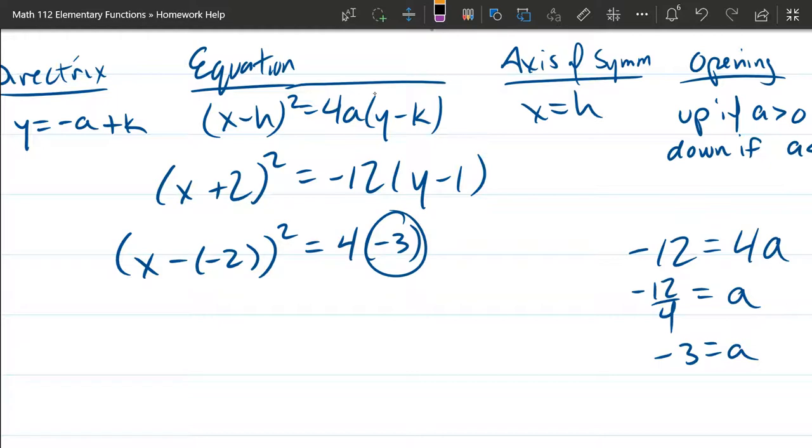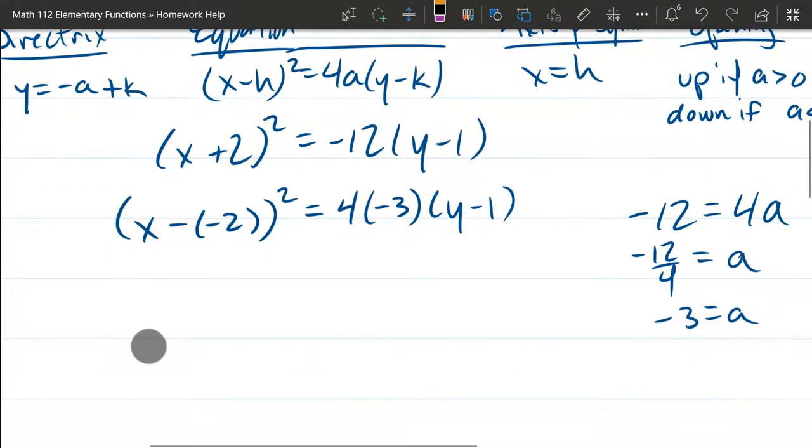So you see that negative 3 right there. Alright, copy now y minus 1. So we're ready to write down all the letters here, all these constants. So first up we'll go left to right.